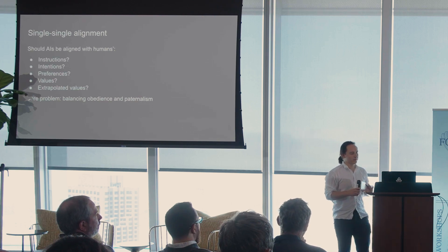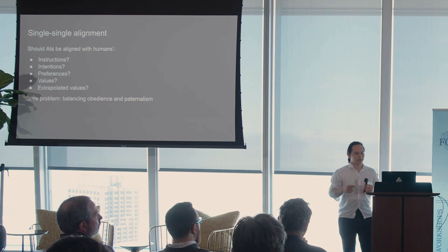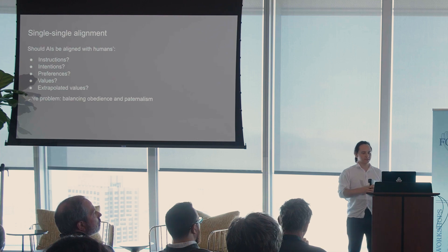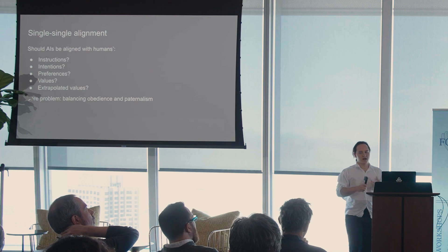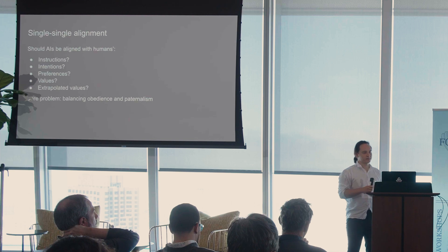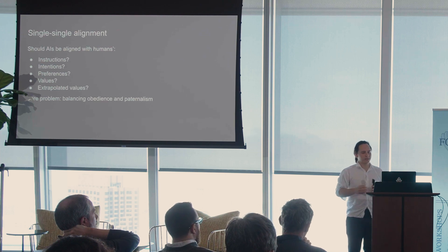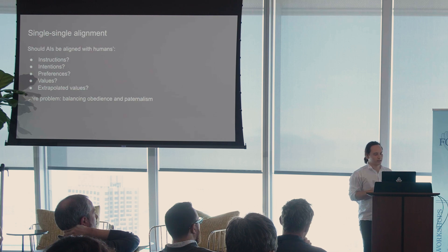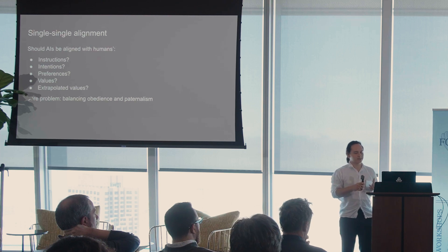We have a spectrum ranging all the way from the literal instructions a human gives the AI, to the intentions behind the instructions, their longer-term preferences and values, all the way to some notion of their idealized values — what they want upon reflection, what they want if you extrapolated their values to become more coherent and sensible. The issue we've run into when actually deploying systems is facing a strong difficulty in balancing between obedience and paternalism.